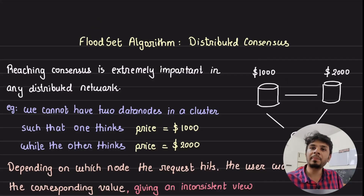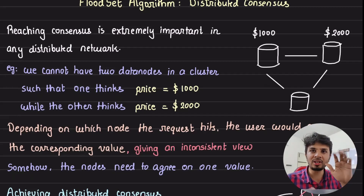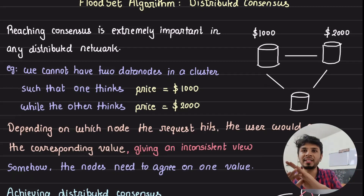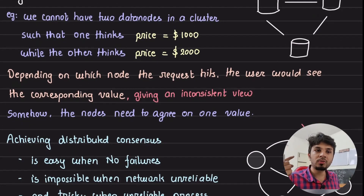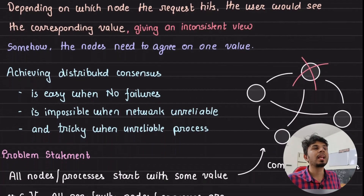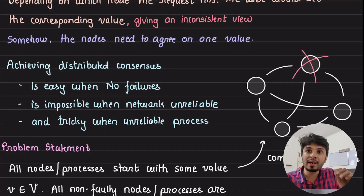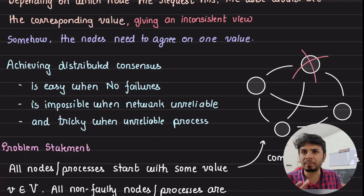Reaching consensus is extremely important for any distributed network. Say in a database cluster of three nodes, one node says the value of price is one thousand dollars while another says it's two thousand dollars. Depending on where the request goes, you get either one thousand or two thousand — this is the classic problem of data inconsistency. That's where we want nodes to talk to each other and come to a consensus on what the actual value of price is. Achieving distributed consensus is easy when you have zero failures — when node-to-node communication is perfect and processes never crash, it's simply a matter of exchanging messages.